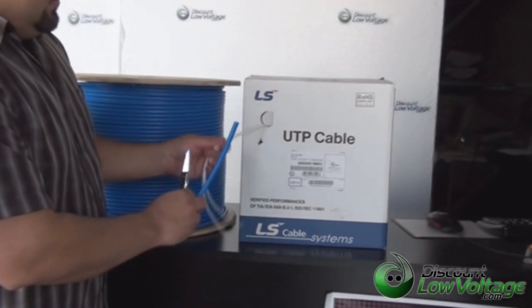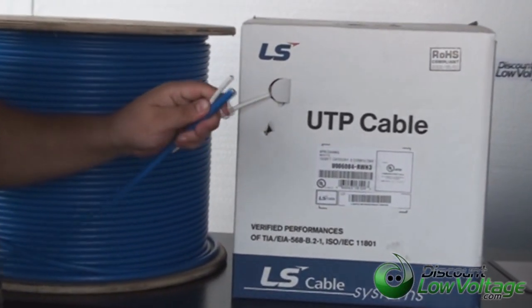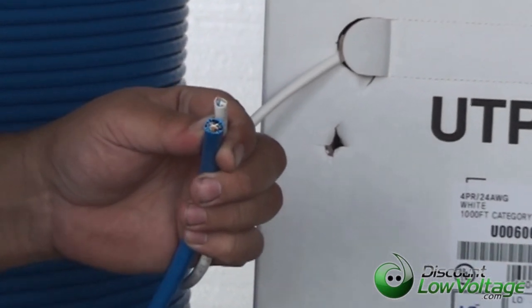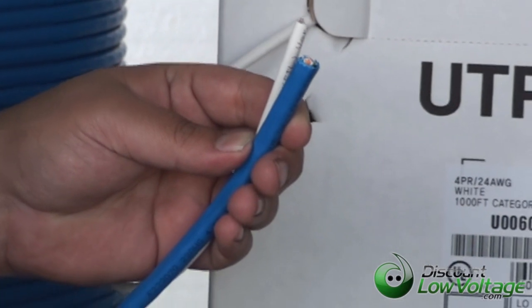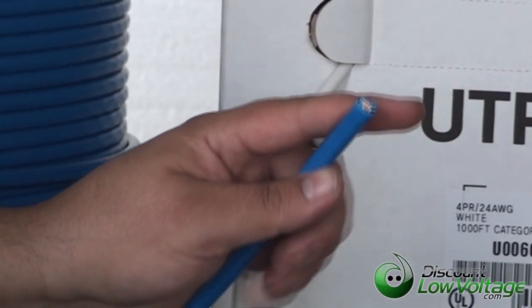Okay, obviously the Cat 6A is the blue and the white is the Cat 6, and there is quite a size difference in the diameter of the cable. The Cat 6A I would say resembles about the size of a Category 3 25 pair cable.